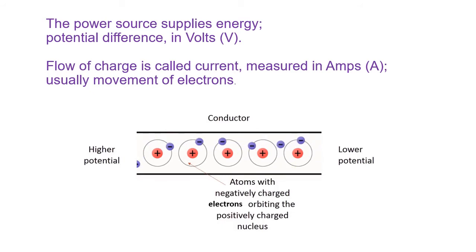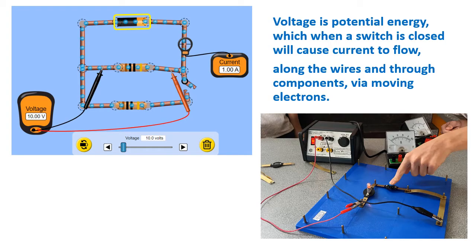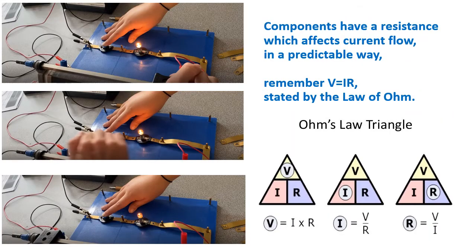Flow of charge is called current, measured in amps — usually the movement of electrons. Voltage is potential energy which, when a switch is closed, will cause current to flow along the wires and through components by moving electrons. Components have a resistance which affects current flow in a predictable way. Remember: V equals IR, stated by the law of Ohm.